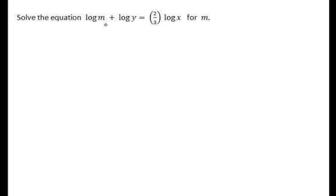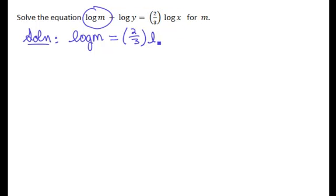If we take a look, we certainly are going to want to isolate that term that has the m in it, because we are trying to solve for m. So in starting my solution, the first thing I'm going to do to get this term log m by itself is to subtract log y from both sides. So that will give us log m is equal to two-thirds times log x minus log of y.